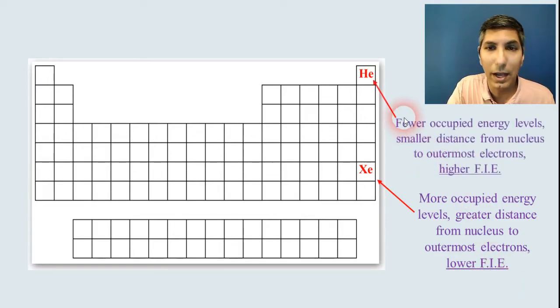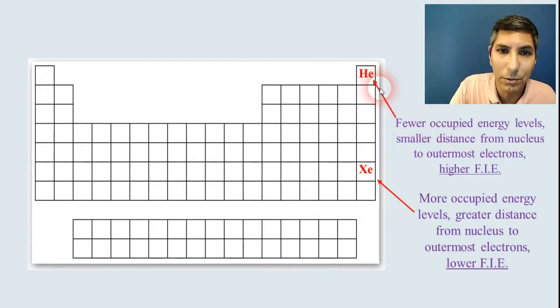Helium is the opposite. If you've got fewer electron shells, occupied energy levels. So the distance from the nucleus to those last electrons will be much smaller. So higher first ionization energy.